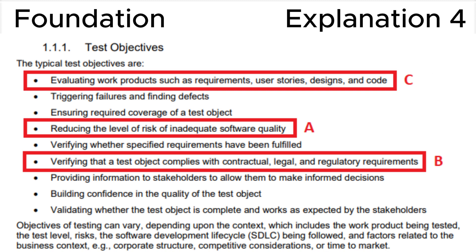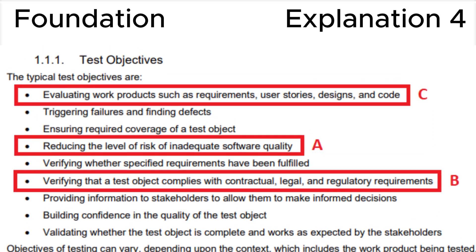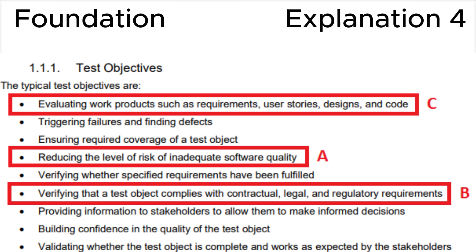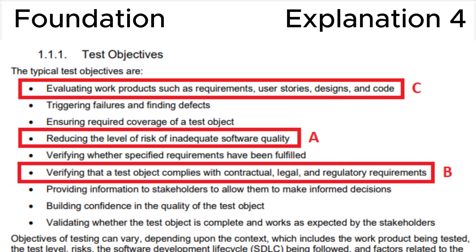All wrong answers A, B, and C are valid testing objectives: A) Reducing the level of risk of inadequate software quality. B) Verifying that a test object complies with contractual, legal, and regulatory requirements. C) Evaluating work products such as requirements, user stories, designs, and code.